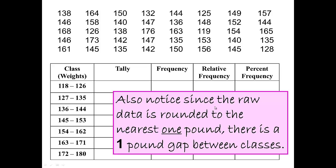Also notice that since the raw data is rounded to the nearest one pound, there will be a one-pound gap between the classes. Between class one and class two, there is a one-pound gap — 127 minus 126 is one pound — and that is okay because all of the data is rounded to one pound and no data falls between 126 and 127 pounds.